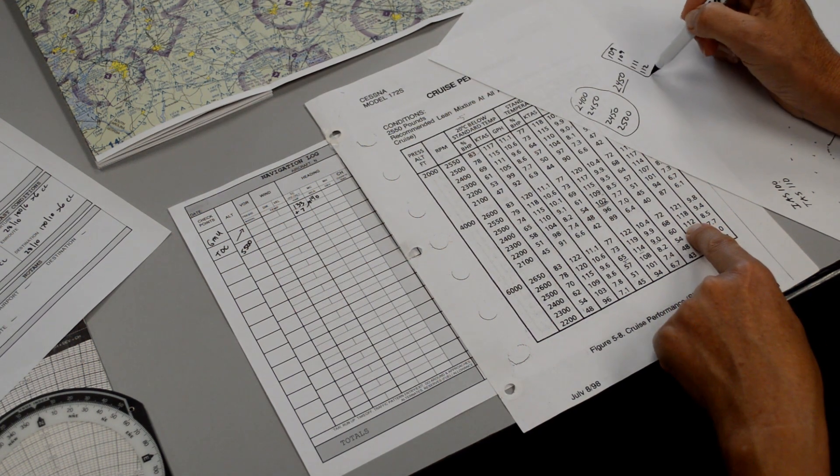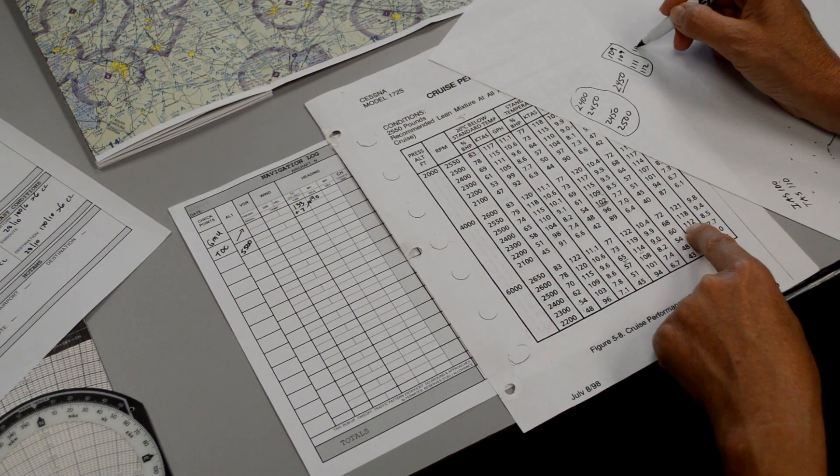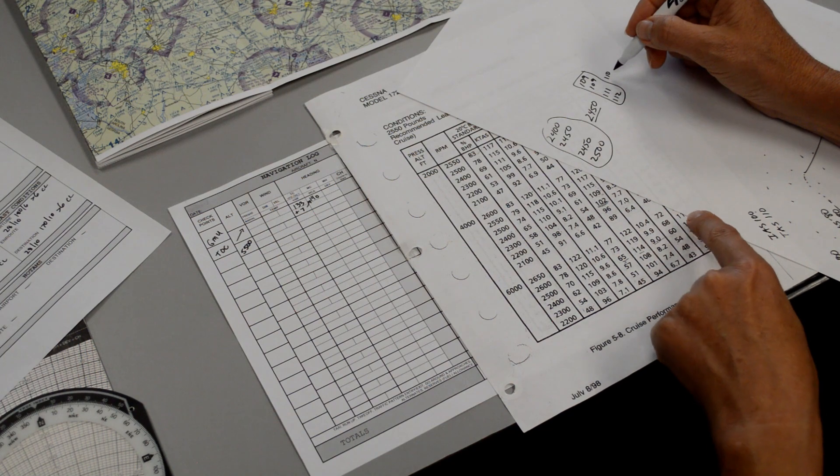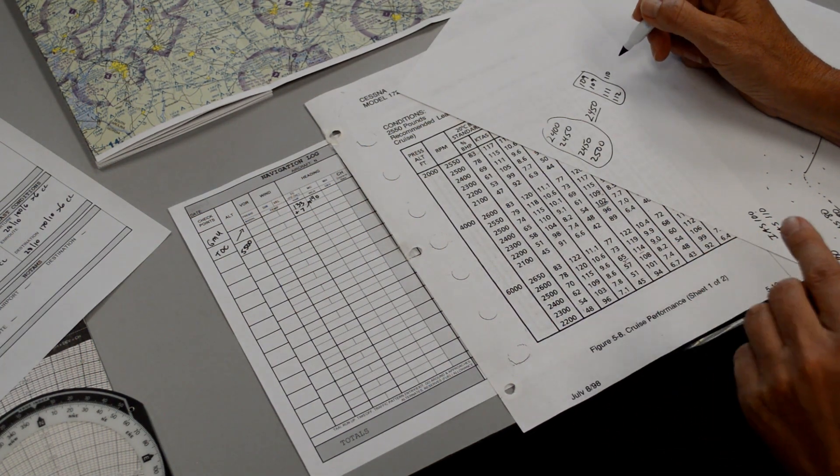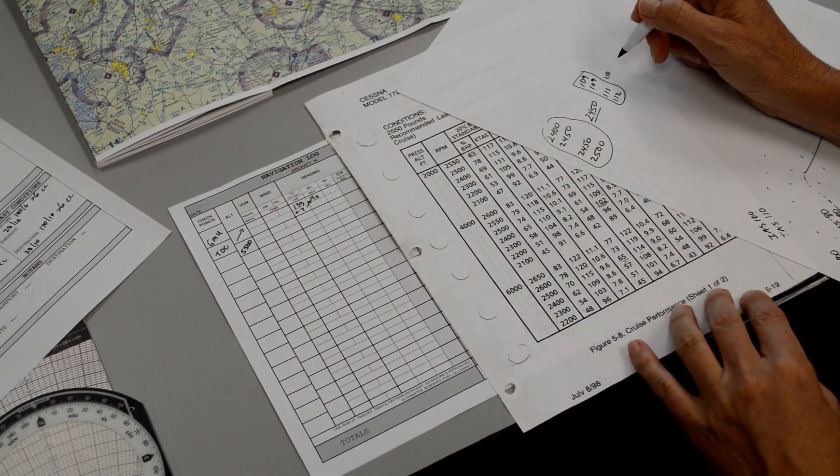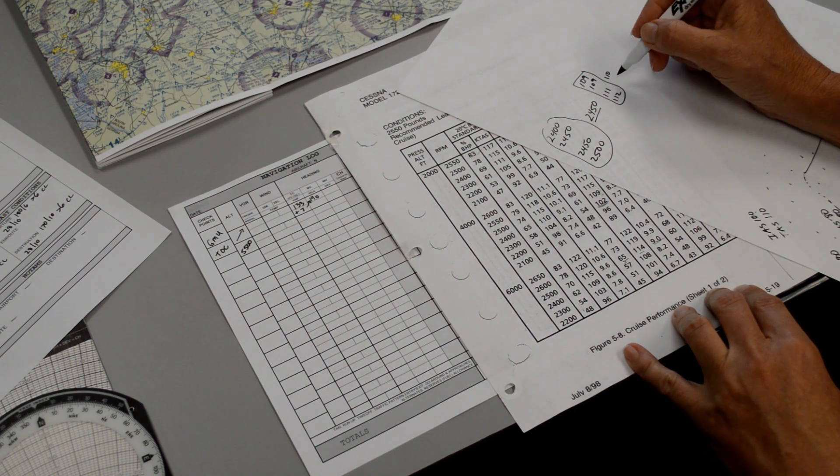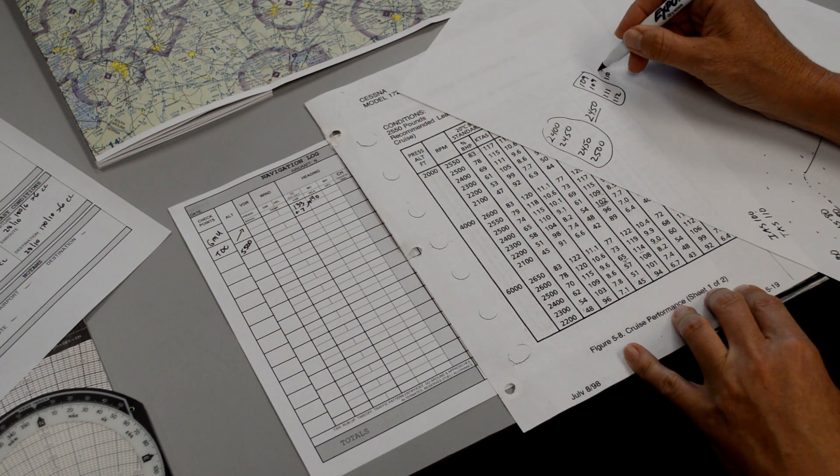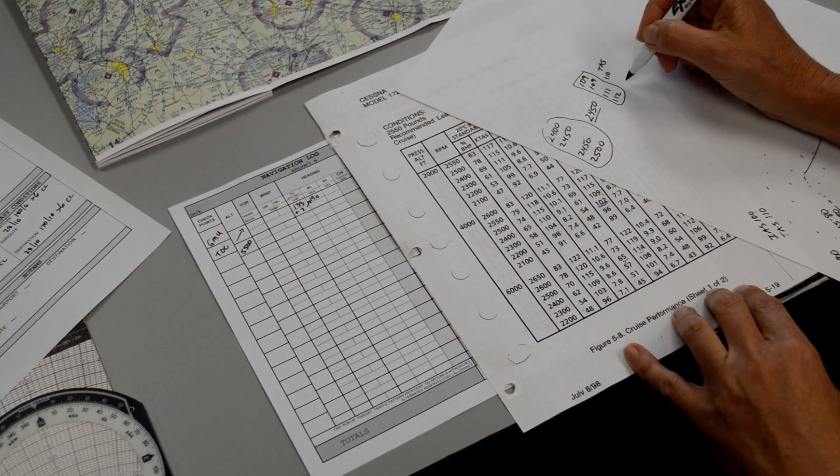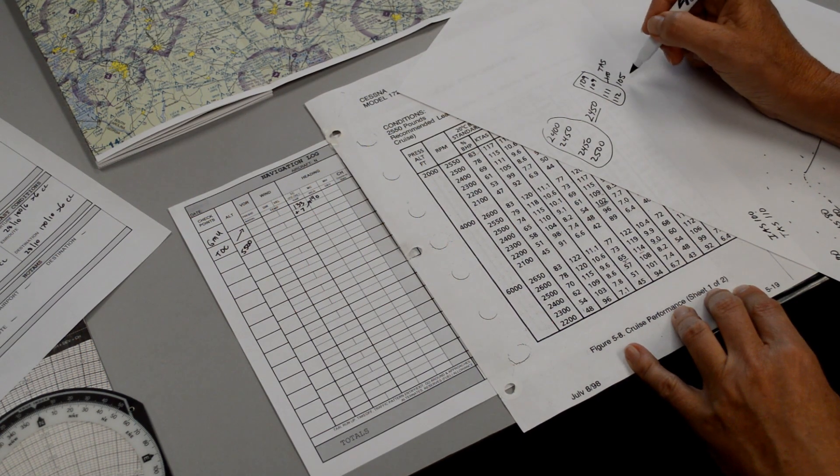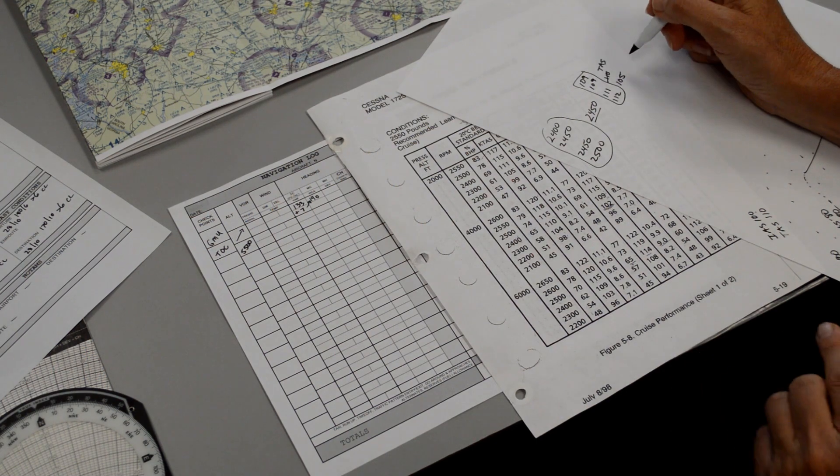So if we average between these, it looks like it would be about 110 for our true airspeed. Now, you only get these values if we have leaned it appropriately and your airplane is in perfect working order. So with this true airspeed, we would be better off estimating that we're going to fly a little bit slower. So I would probably use 105 as my true airspeed, being more conservative.